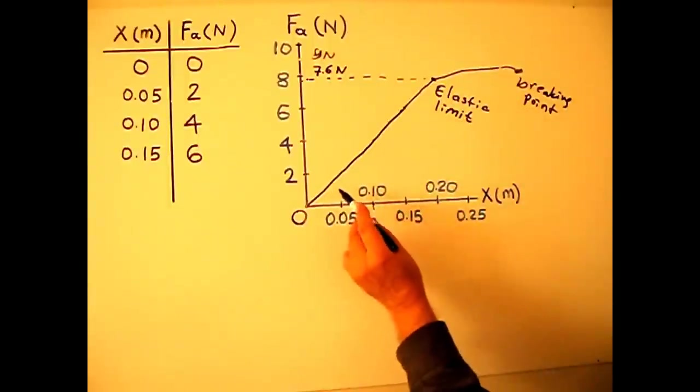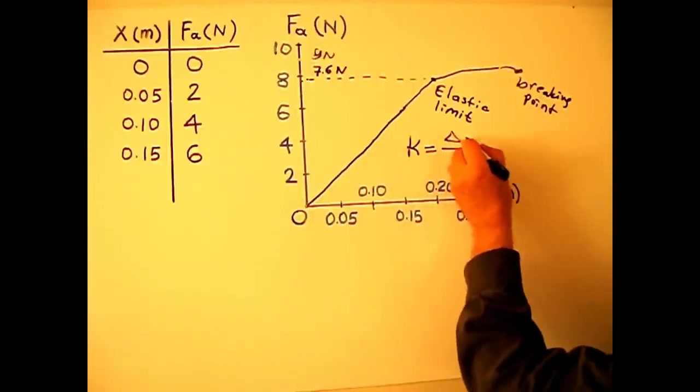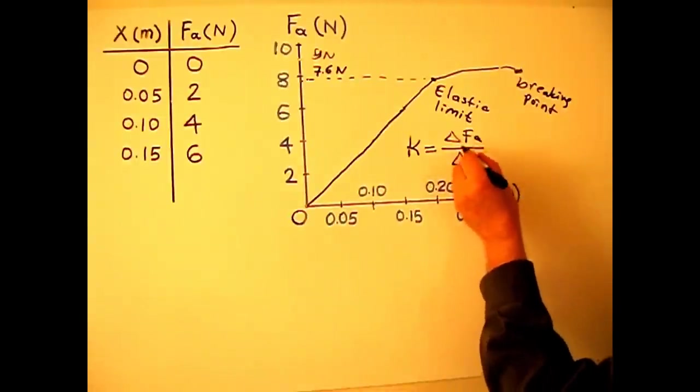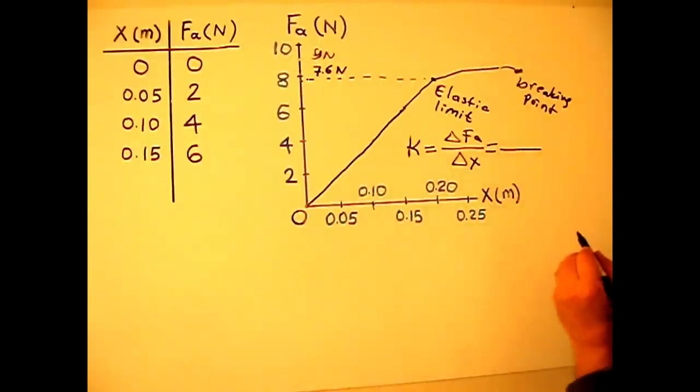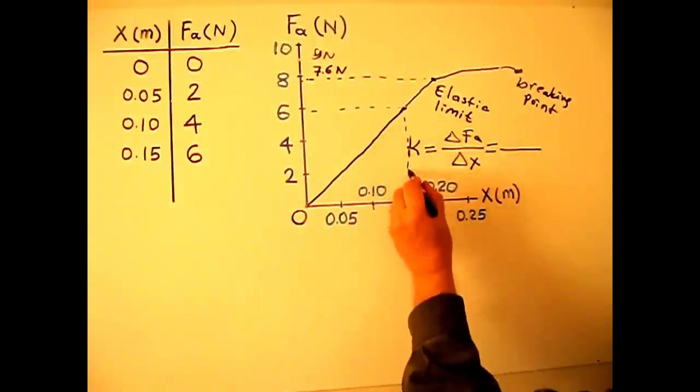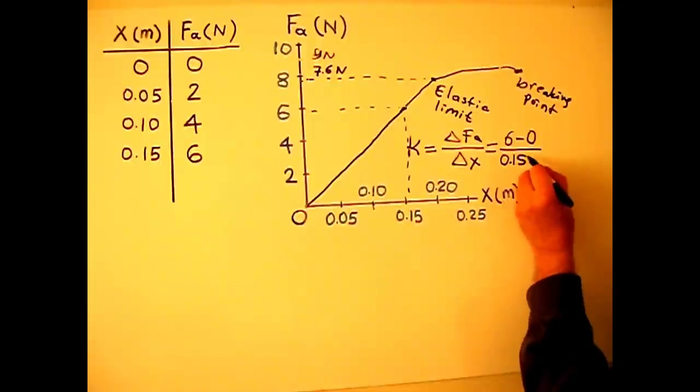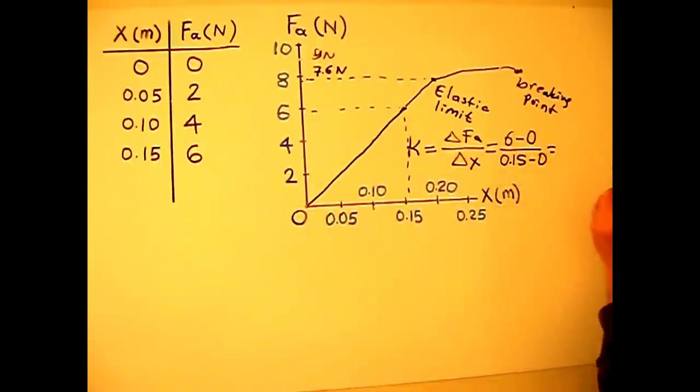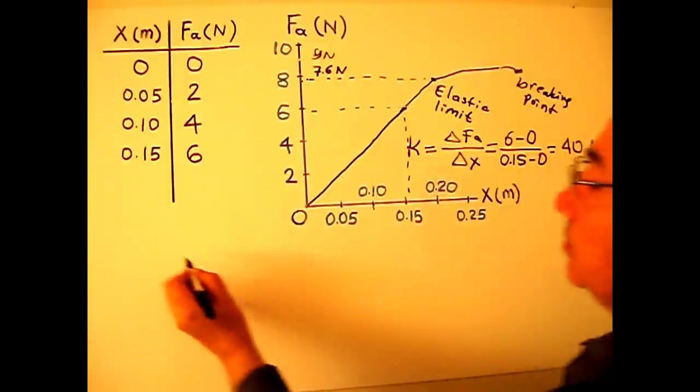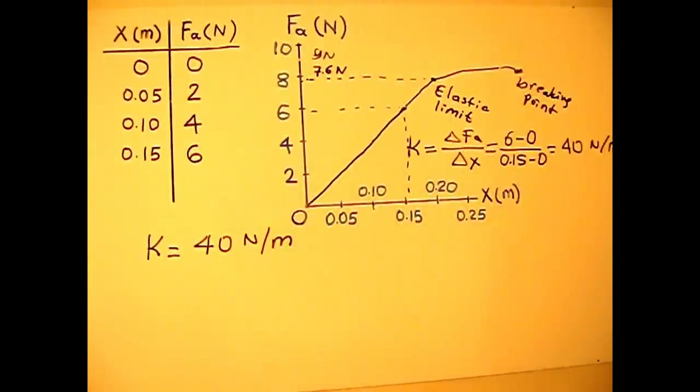How can we find the slope of this line? Let's call the slope k. k equals delta FA over delta x, rise over run. We take two points on the graph. Let's say we take this point and this point. 6 minus 0 newtons, then we get 0.15 meters minus 0 meters. When we divide this, we get 40 newtons per meter. k equals 40 newtons per meter. What is k? k is called spring constant or force constant.